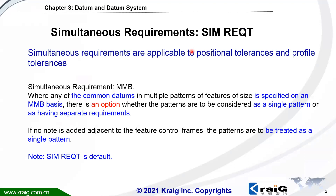Simultaneous Requirements, or SIM-REQT, is the default requirement per ASME Y14.5, and this requirement is only used for position tolerance or profile tolerance. Simultaneous Requirements means if there are multiple features — usually geometric tolerances, either position tolerance or profile tolerance — with the same datum and the same MMB modifier, then you are allowed to consider these multiple features as a single pattern or as separate features.